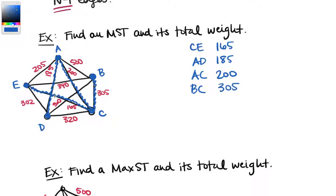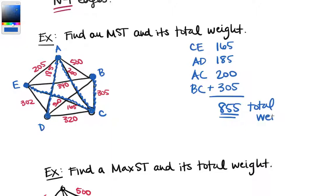We started with five vertices and have now chosen four edges — one, two, three, four. We've hit every vertex with no circuits, so here is our minimal spanning tree, our MST. To find its total weight, we add all the edge weights together: 165 + 185 + 200 + 305 = 855 for the total weight.